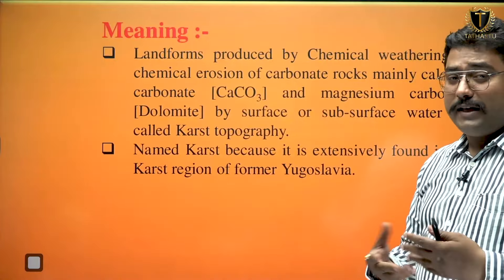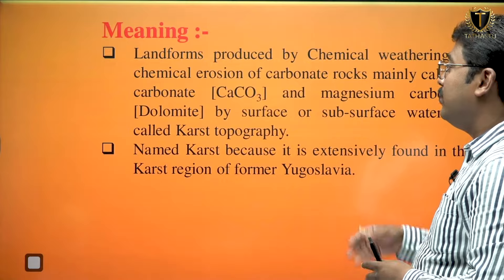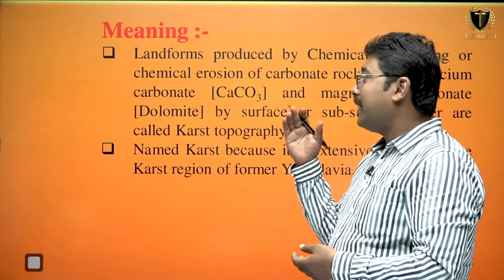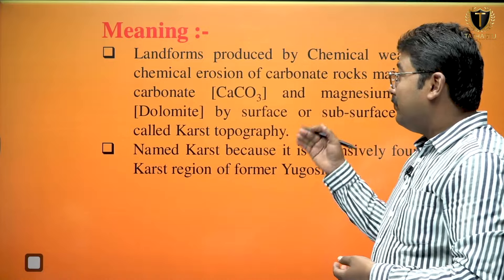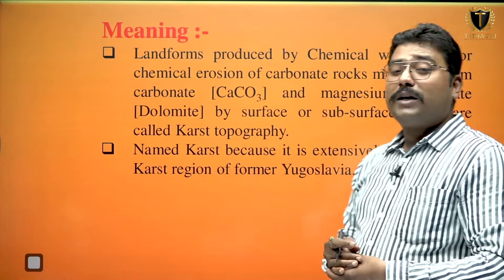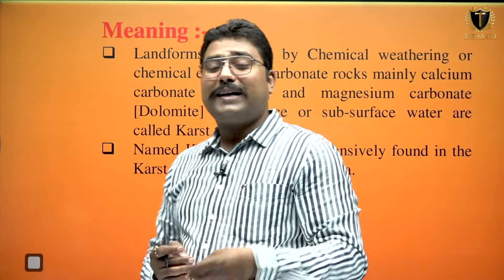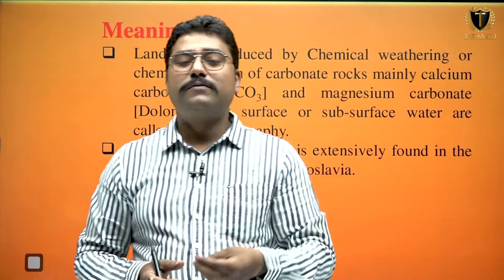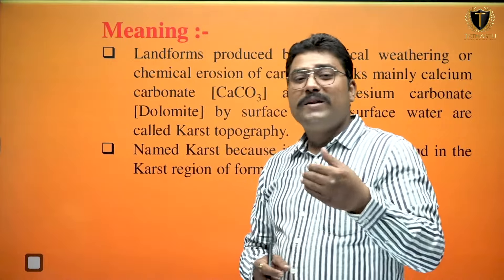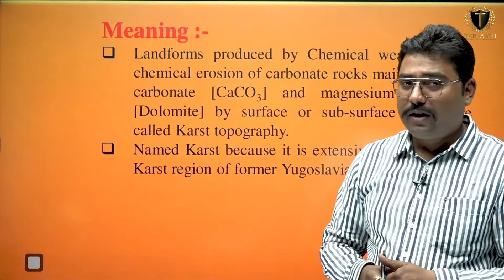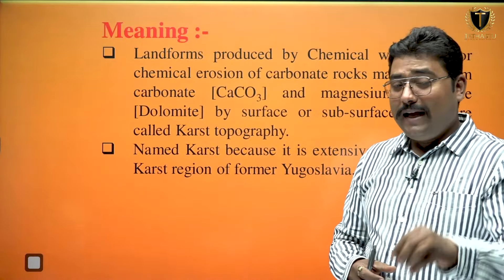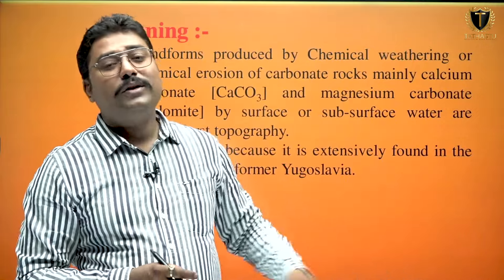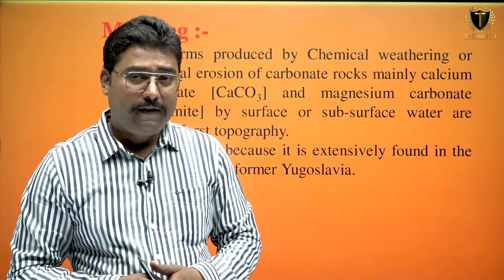Landforms produced by the chemical erosion of the carbonate rocks — calcium carbonate and magnesium carbonate — by the surface water or subsurface water is considered as limestone topography, and as because it is found in the former Yugoslavia karst region, so it is considered as karst topography.